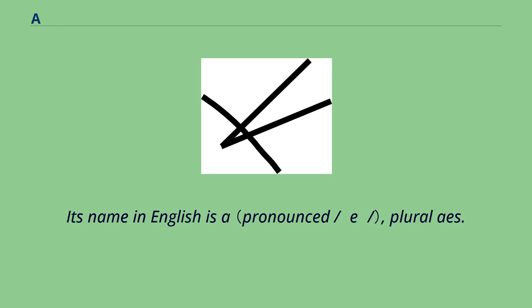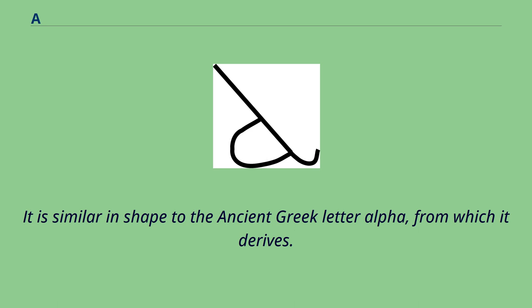A is the first letter of the ISO basic Latin alphabet. Its name in English is A, plural: A's. It is similar in shape to the ancient Greek letter alpha, from which it derives.